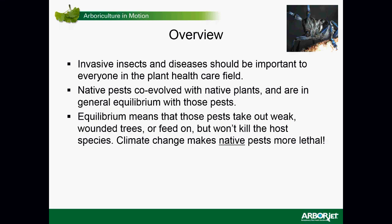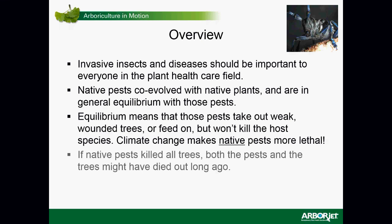Equilibrium means that those pests will take out weak trees, wounded trees, or feed on but won't kill the host species. This is the general rule of things in a place where the insects and the trees co-evolved. But climate change is making native pests more lethal. One great example is mountain pine beetle, a pest that is not invasive but has spread rapidly because of warming forests. If native pests killed all the trees, both the pests and those trees might have died out long ago. A pathogen or insect that is effective at what it does doesn't kill the thing it needs to feed on — it would be like humans planting corn, eating all of it, and leaving none of the seed to make more.